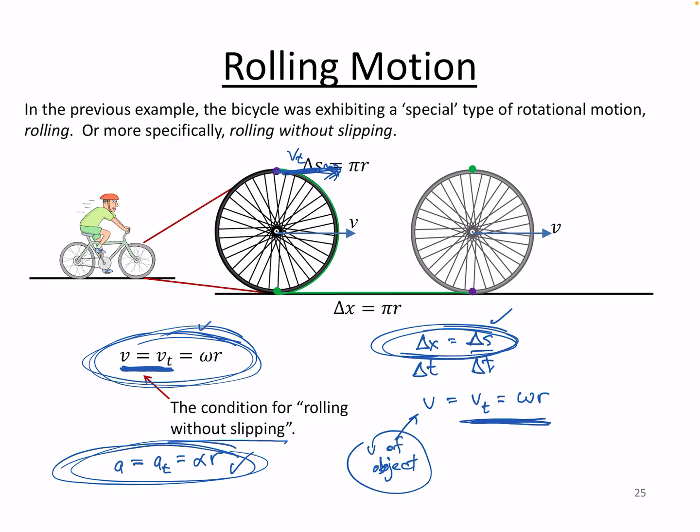Actually, there's one more slightly mind-bending thing I'd like to show you about rolling motion. Think about what I said initially: static friction is enough that the point in contact with the road does not slip — that's the whole 'without slipping' part. And yet if you have rolling without slipping, you have some forward progress — the center of mass is moving forward with some velocity v.